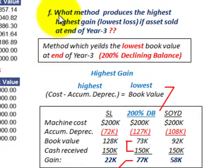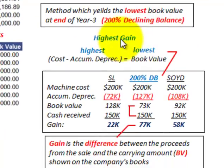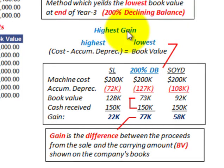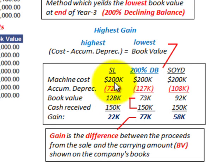What method produces the highest gain or lowest loss if the asset is sold at the end of year three? The answer is the method which yields the lowest book value at end of year three — the 200% declining balance. The highest gain comes from the highest accumulated depreciation: cost minus highest accumulated depreciation equals lowest book value. Under each method at year three, the machine cost is $200,000, and accumulated depreciation differs under each method.